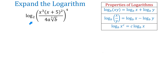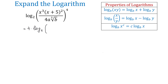In our problem, we have the logarithm of a big expression that is raised to the fourth power. We can start this problem in two different ways: we can either raise each factor in the numerator and denominator to the fourth power, or we can apply the power rule and move this 4 in front of the logarithm. I will start by moving the exponent 4 in front of the logarithm, writing 4 times log base 2 and copying the whole expression down.